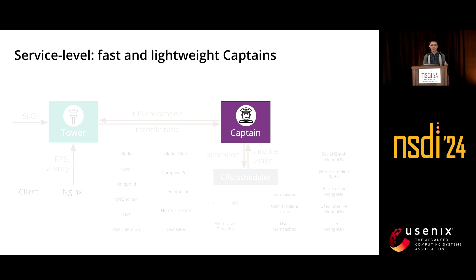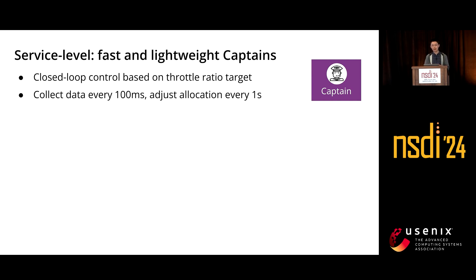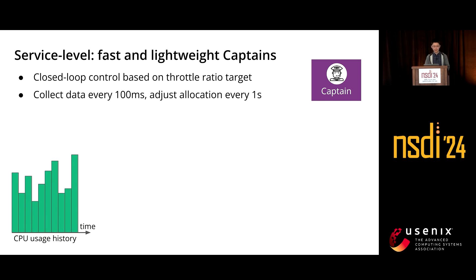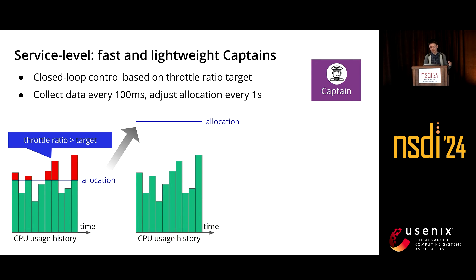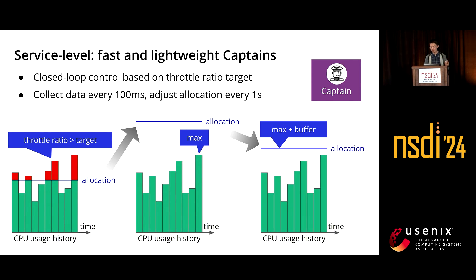For the service-level controller, we designed Captains. We want them to be fast and lightweight, so they use closed-loop control to achieve the throttle ratio target. Captains collect data every 100 milliseconds and adjust CPU allocation every second. If the throttle ratio is higher than the target, Captain will scale up. If the CPU allocation is higher than the max CPU usage, Captain will scale down to the max CPU usage plus a small buffer value. The calculation of this buffer is important to Captain's algorithm and is rather tricky, so please refer to our paper for more details.